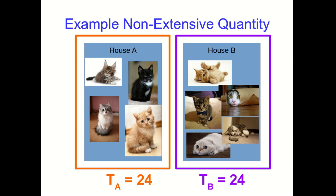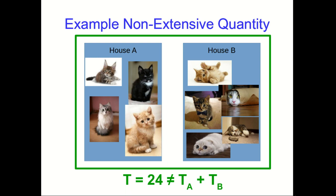But now if we think of the combined system, well, clearly the number of hours per day that the combined system is occupied by cats is also 24. And that is not the sum of the values of this variable t for the individual parts of the system.